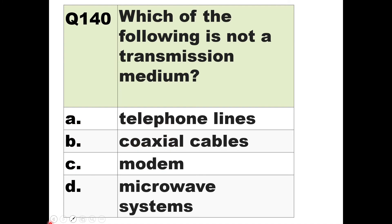Question 140: Which of the following is not a transmission medium? Telephone lines are guided transmission media. Coaxial cables are guided media. Modem is a unit that performs modulation and demodulation — it is not a transmission medium. Microwave systems can be a wireless transmission medium. So option C — modem — is not a transmission medium.